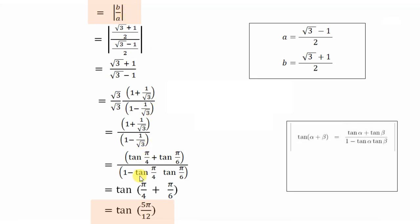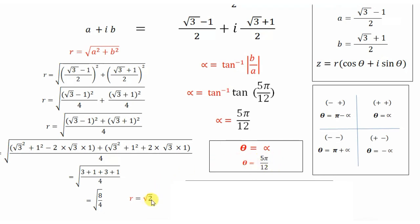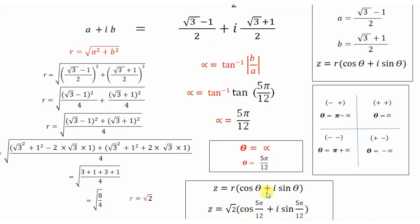Substituting back, α = tan⁻¹(tan(5π/12)) = 5π/12, so θ = 5π/12. Now we have R = √2 and θ = 5π/12. Putting these into the polar form Z = R(cos θ + i sin θ), the polar form of the given complex number is Z = √2 (cos(5π/12) + i sin(5π/12)).